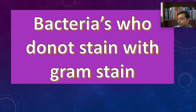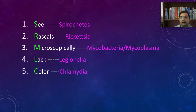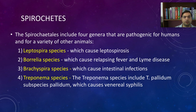That completes gram negative bacteria. Now we move to bacteria that are neither gram negative nor gram positive. The mnemonic is 'Sea Rascals Microscopically They Lack Color': S for Spirochetes, R for Rickettsia, M for Mycobacteria and Mycoplasma, L for Legionella, C for Chlamydia.